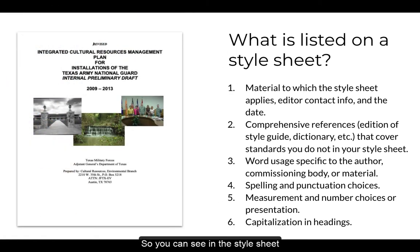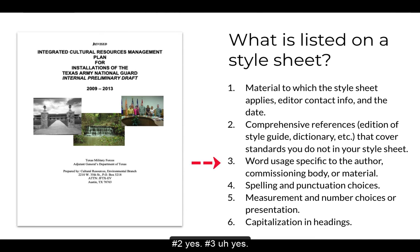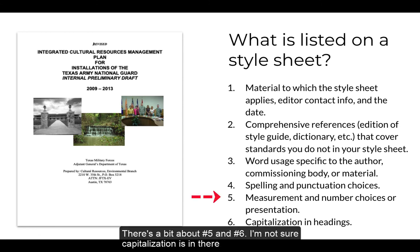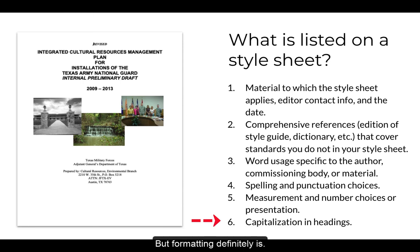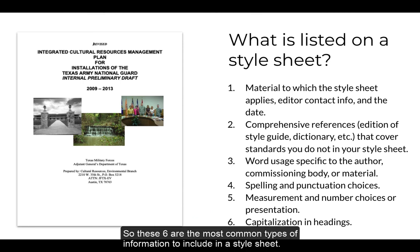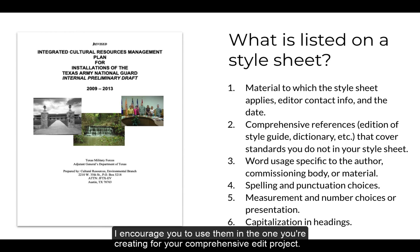So you can see in the style sheet I just showed you, numbers one through four are covered. There's a little bit about number five and number six. Capitalization may not be explicitly in there, but formatting definitely is. These six are the most common types of information to include in a style sheet. I encourage you to use them in the one that you're creating for your comprehensive edit.